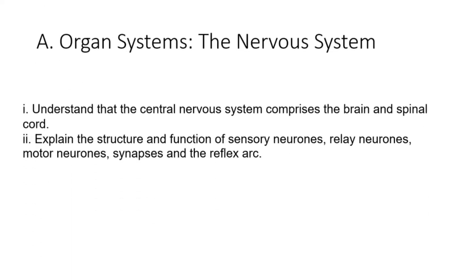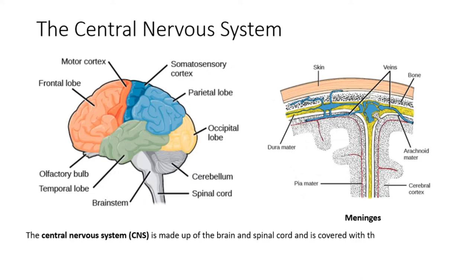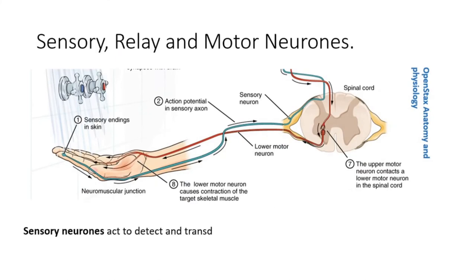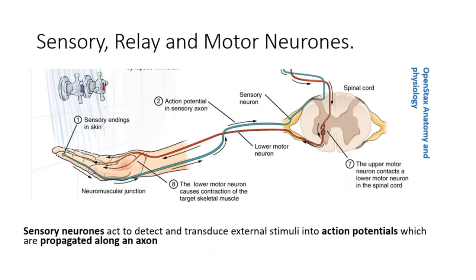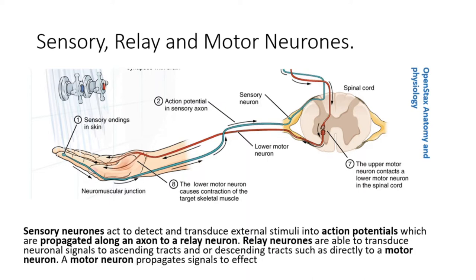Now let us have a look at the next objective: the nervous system. The central nervous system, CNS, is made up of the brain and spinal cord, and is covered with three layers of protective coverings called meninges. Sensory neurons act to detect and transduce external stimuli into action potentials, which are propagated along an axon to a relay neuron. Relay neurons transduce neuronal signals to ascending and/or descending tracts, such as directly to a motor neuron. A motor neuron propagates signals to effector muscles in response to the primary stimuli from the sensory neuron.